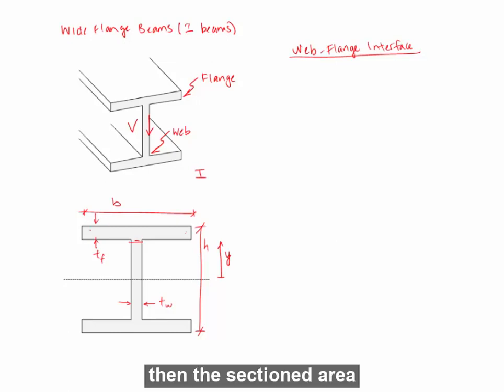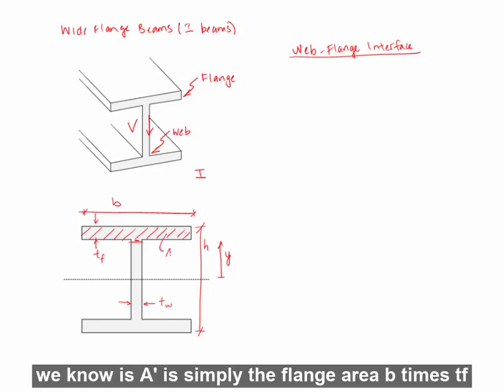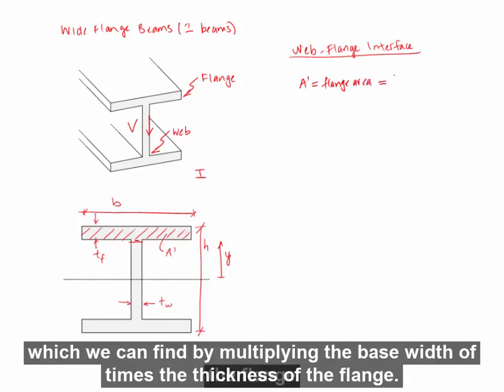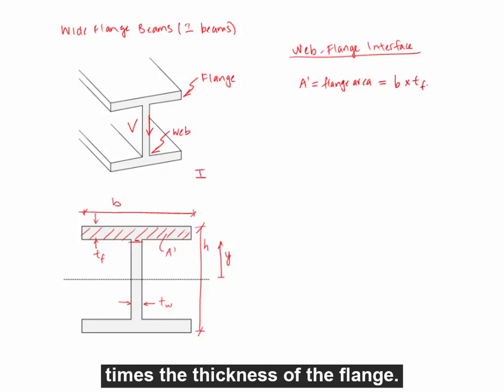Then the sectioned area, we know as A-prime, is simply the flange area, B times TF. So A-prime is the flange area, which we can find by multiplying the base width of the flange times the thickness of the flange.